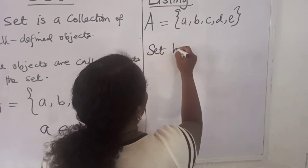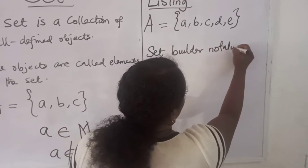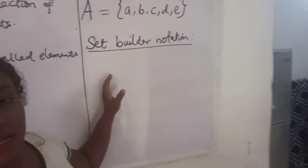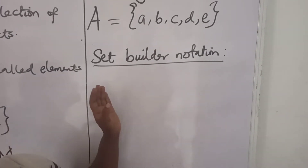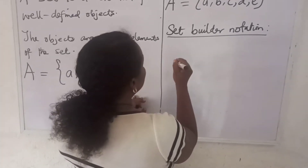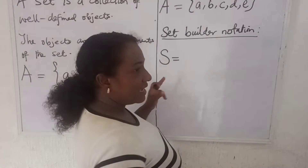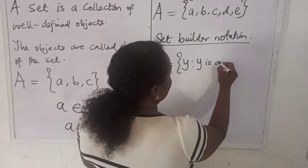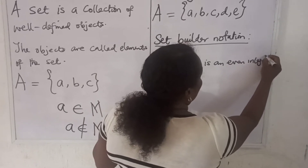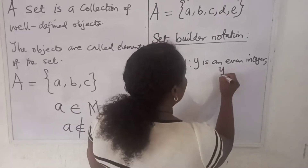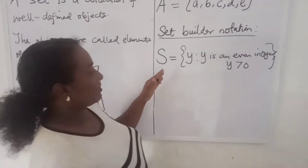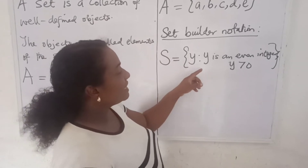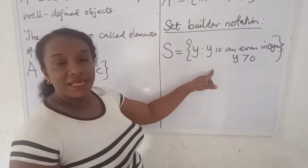The second method is by set builder notation. In this method, the characteristic which describes the elements of the set is written down. For instance, if we have a set S, we can write S as the set of all Y such that Y is an even integer and Y is greater than zero.